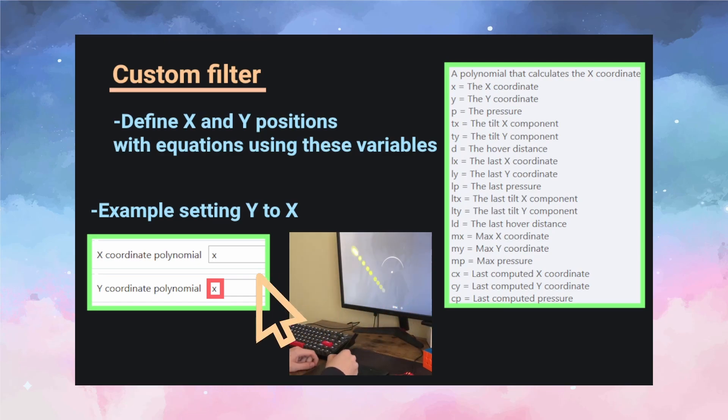So that's all well and good, we can have all of these fancy equations for our cursor position. But how are we going to use these variables to define a beatmap? It seems impossible at first. So we have the position of our cursor, we have the tilt, we have the last computed values of these. How on earth is that helpful for us playing OSU?